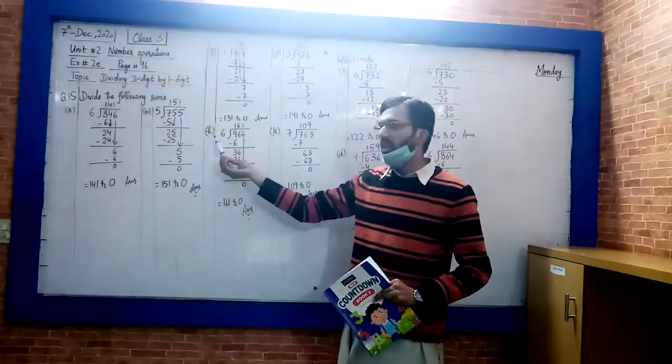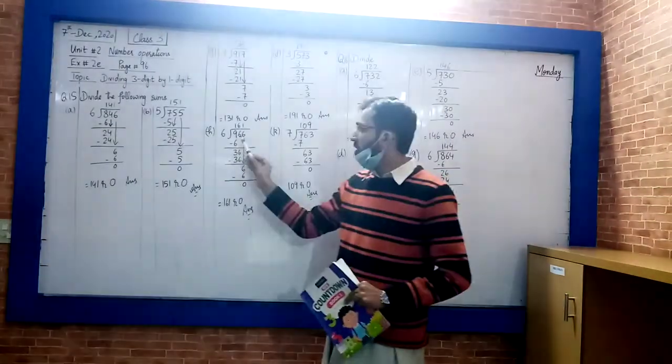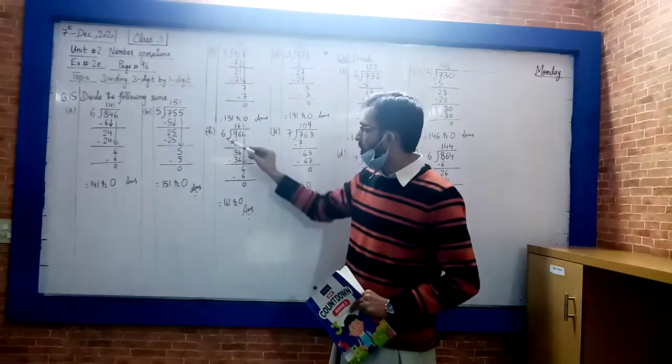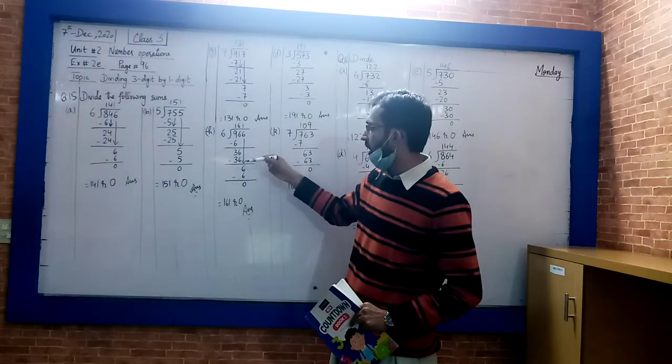Next part is H: 966 divided by 6. First digit is 9. 6 into 9 goes 1. 9 divided by 6... let me write 6 times 1 is 6.